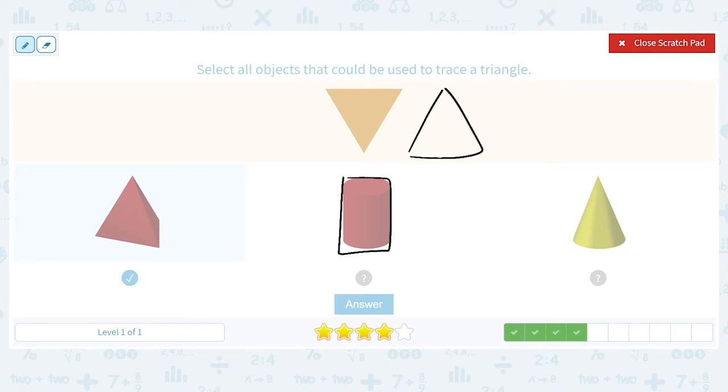But if I take the cone and I put it flat so that the circular end is facing you, I would trace a triangle.